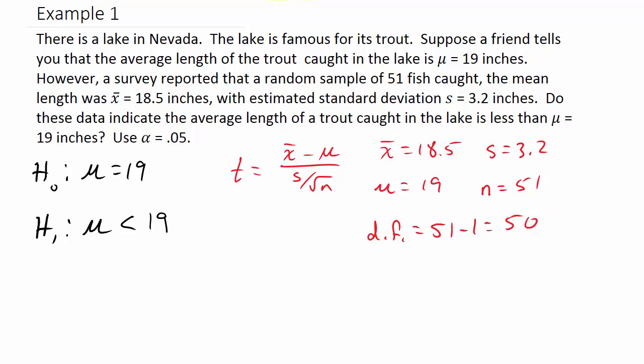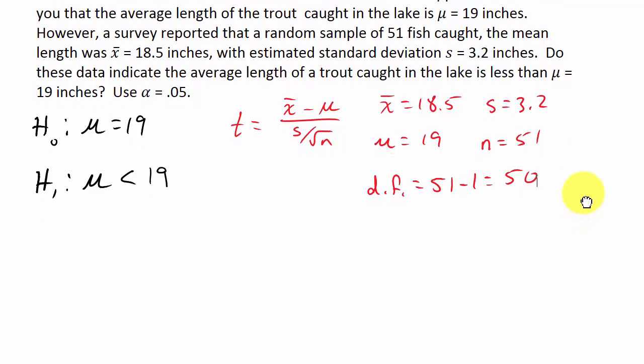Let's calculate our test statistic. So t equals x bar minus mu over s divided by the square root of n. We get negative 1.116. That's our test statistic, our t value.